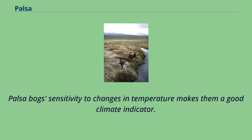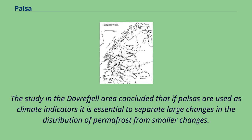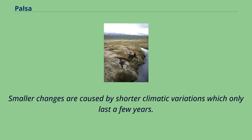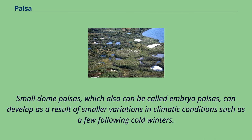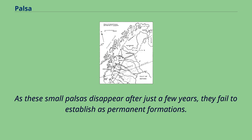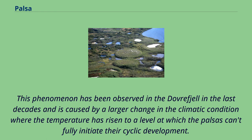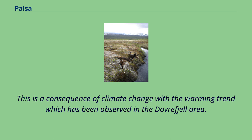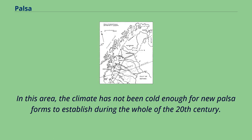Palsa bogs' sensitivity to changes in temperature makes them a good climate indicator. The study in the Dovre fjell area concluded that if palsas are used as climate indicators, it is essential to separate large changes in the distribution of permafrost from smaller changes. Smaller changes are caused by shorter climatic variations which only last a few years. Small dome palsas, which can also be called embryo palsas, can develop as a result of smaller variations in climatic conditions such as a few following cold winters. As these small palsas disappear after just a few years, they fail to establish as permanent formations. This phenomenon has been observed in the Dovre fjell in the last decades and is caused by a larger change in the climatic condition where the temperature has risen to a level at which the palsas can't fully initiate their cyclic development. In this area, the climate has not been cold enough for new palsa forms to establish during the whole of the 20th century.